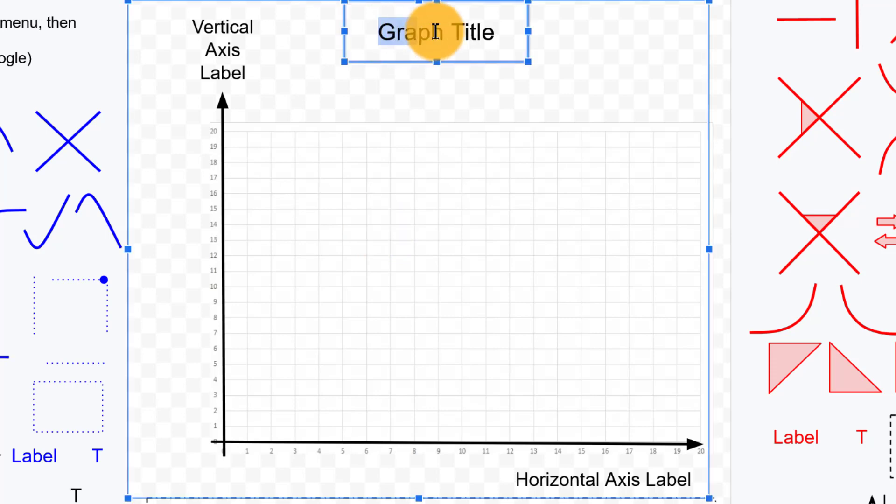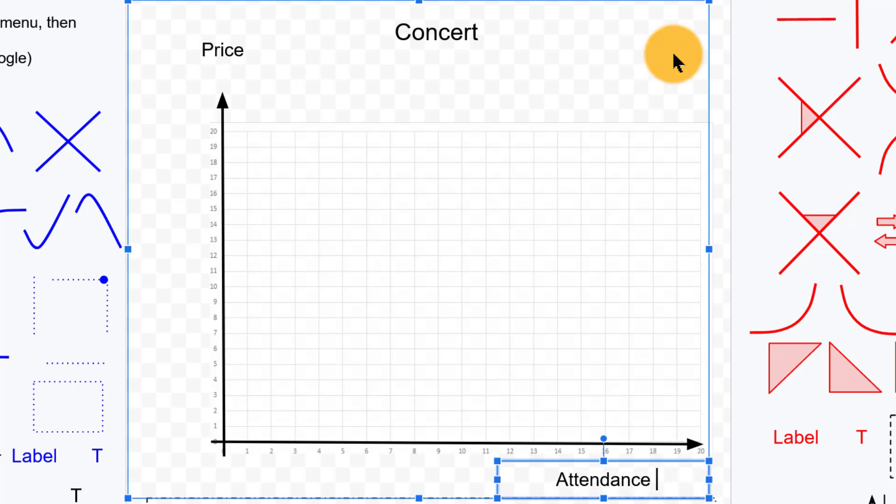So to give us an example to talk about, let's think about perhaps a concert coming up later. And perhaps on the y-axis, the vertical axis, we want to put the price of the tickets to this concert. And then on the x-axis, we'll put attendance. How many people end up buying tickets and going to this concert?